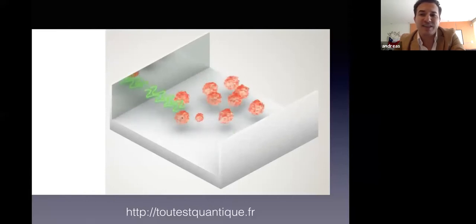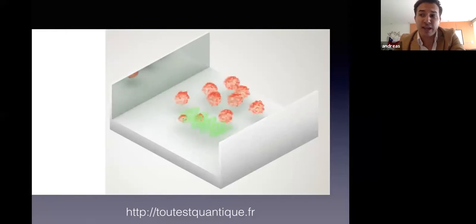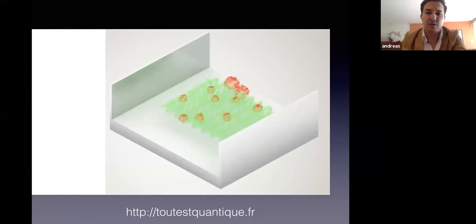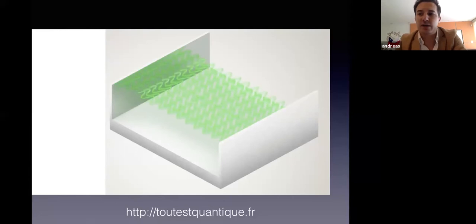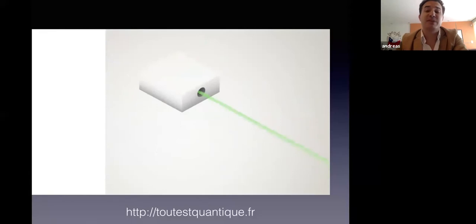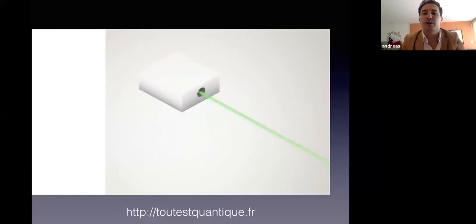In a laser, the excited atoms are placed between two mirrors. A first photon stimulates an atom, which emits a second photon, and so on, amplified by the mirrors. The resulting photons are all identical — they have the same energy, giving them the same color and a unique direction. This is how, for example, the argon laser works.